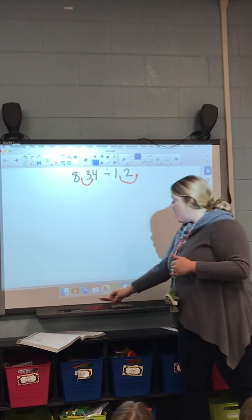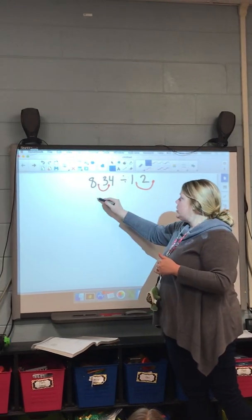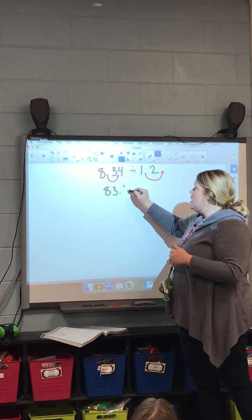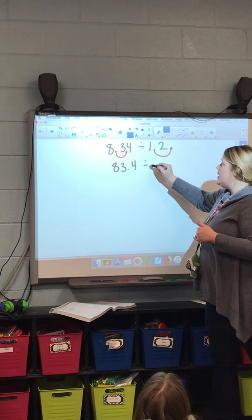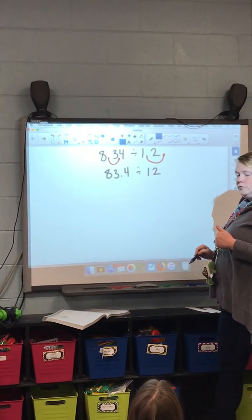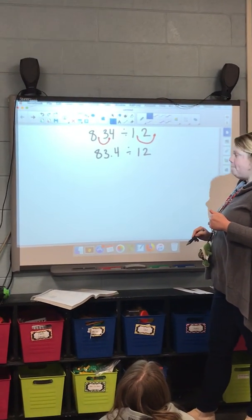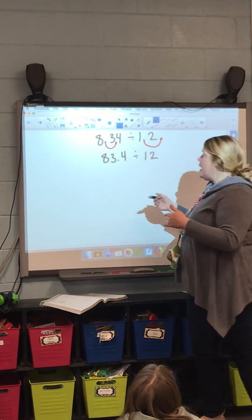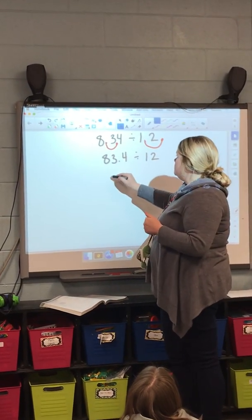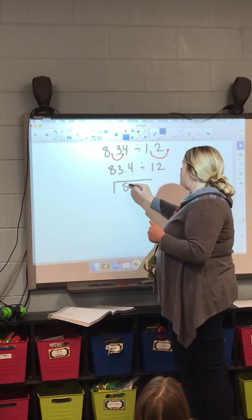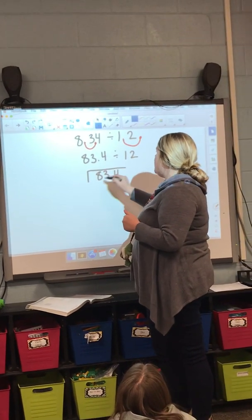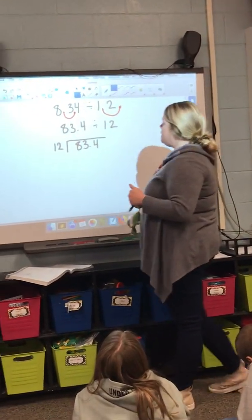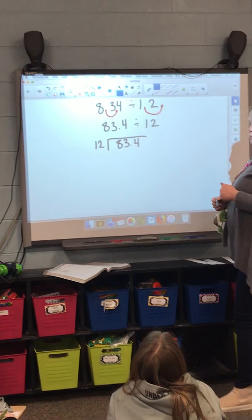Then I rewrite my new problem, which is 83 and 4 tenths divided by 12. Then I write it as long division. Because I need to check my place values, right?